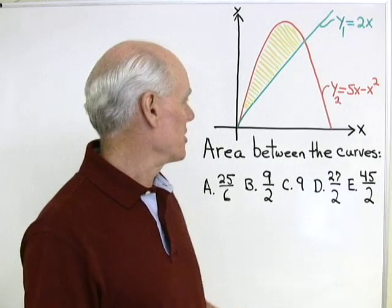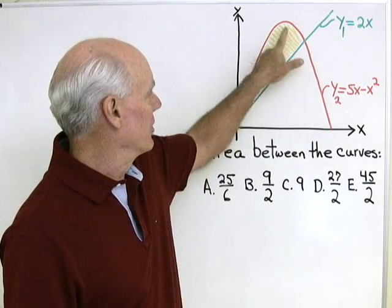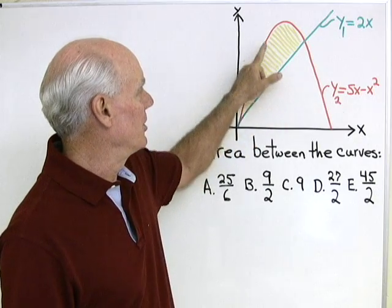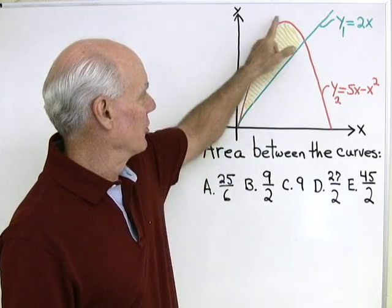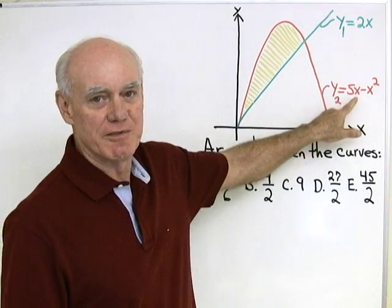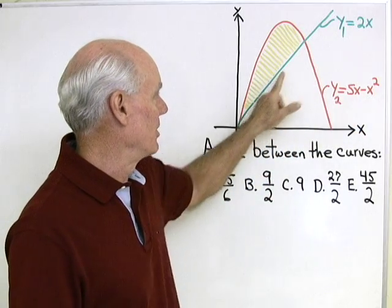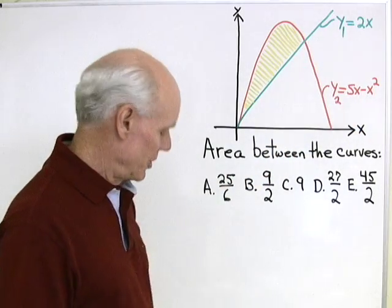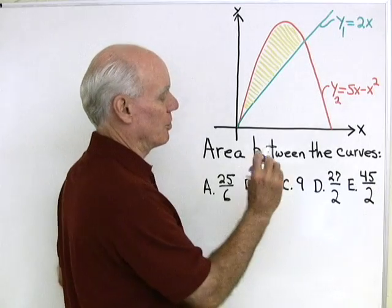Here's a problem from the AP Calculus exam. We want to find the area of the shaded region between these two curves. I've labeled this red curve as y2 is 5x minus x squared, and the green curve is y1 equal 2x. So I want to find the area between those two curves.